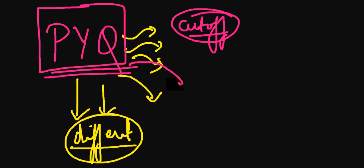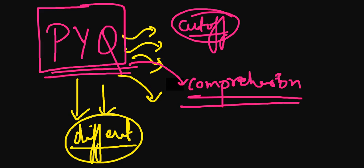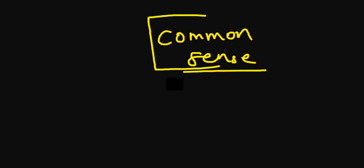Doing PYQs will be more helpful than doing different types of books for your preparation of the general section. There will be some part of comprehension as well, so you can easily comprehend from the paragraph what they are asking. This general section will be equal for all of you, so all of you might not be from the humanities background. For doing this part, you just need common sense. Apart from common sense you don't need any books or anything, just your common sense.